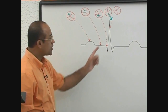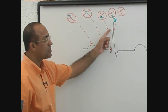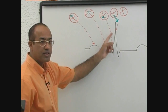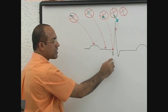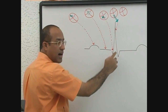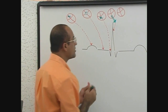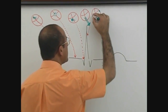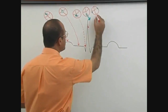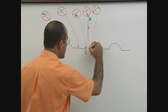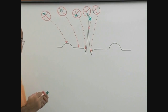In QRS complex, the first negative wave is called Q. After the first negative wave, whichever positive wave is there is called R. And after the positive wave, if there is another negative wave, that is called S. Once the septum is depolarized you get Q wave; with major ventricular depolarization you get R wave. When there is basal ventricular depolarization — the last part of the ventricle to be depolarized — that leads to the S wave.